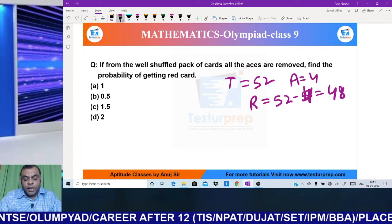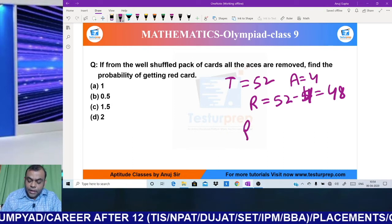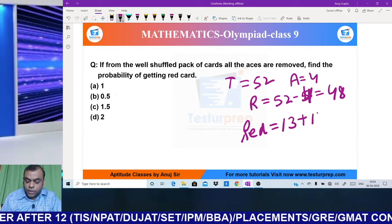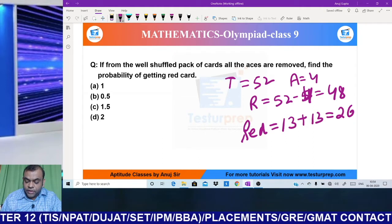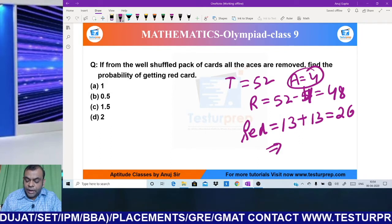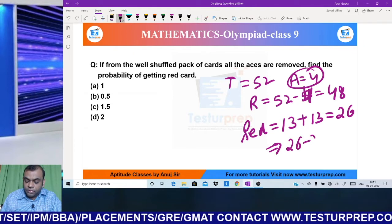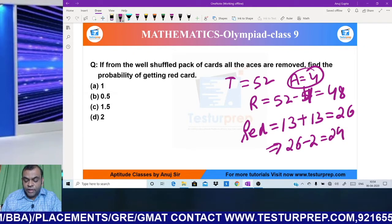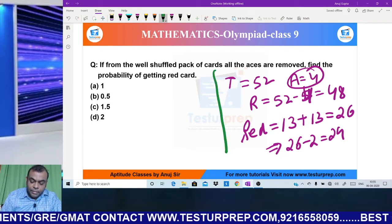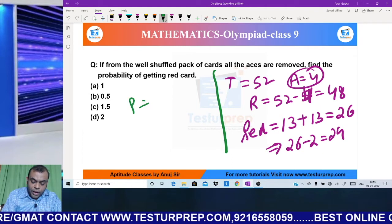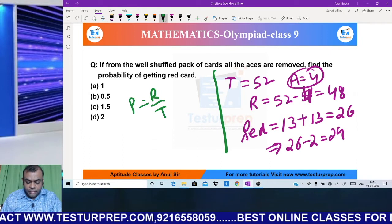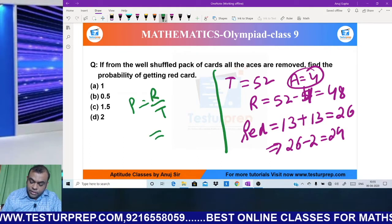Find the probability of getting a red card. Total red cards are 13 hearts and 13 diamonds, that is 26 red cards. But we've already removed the ace of hearts and ace of diamonds, so 26 - 2 = 24 cards are left. Probability formula is required cases divided by total cases.